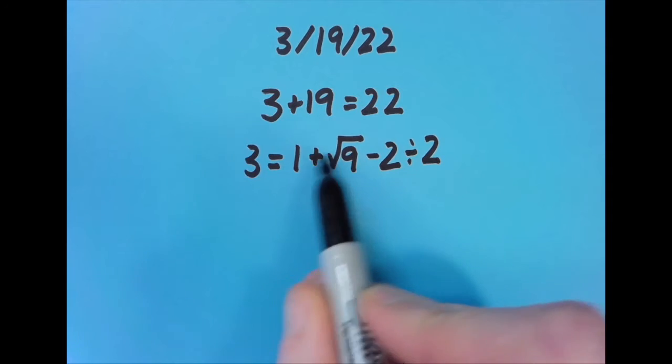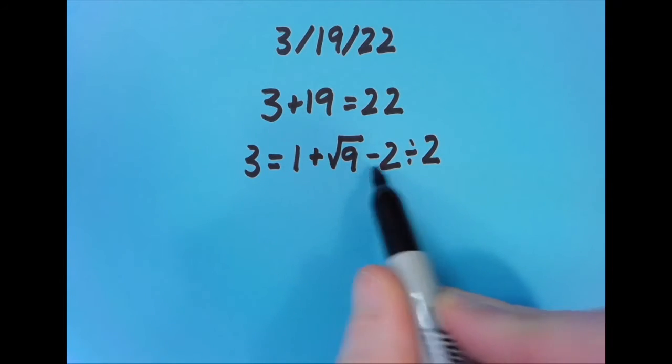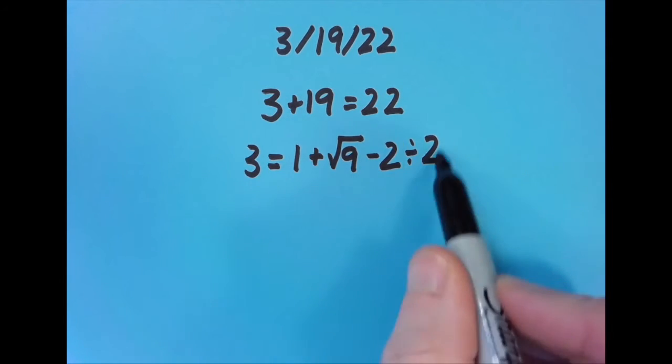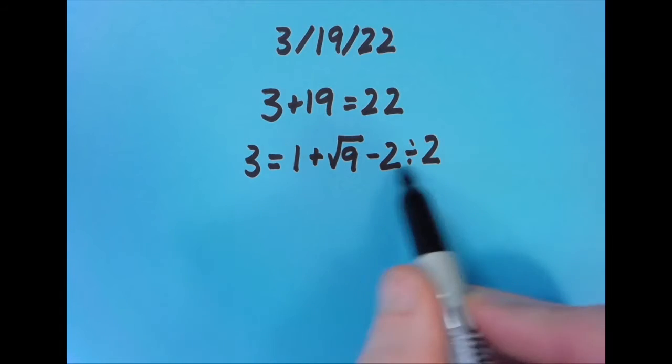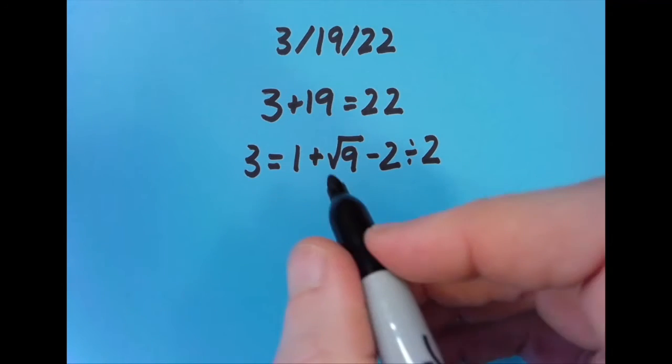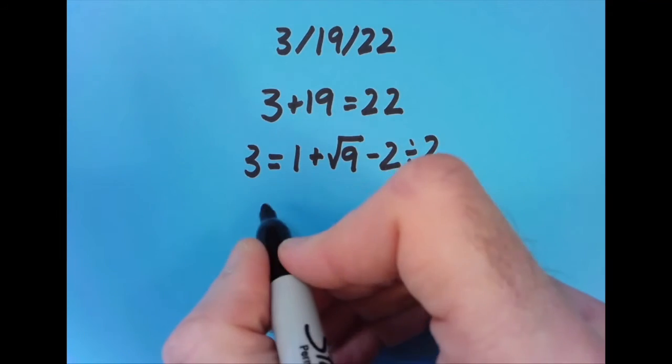So we have 1 plus 3, which is 4. Then we have to do minus all of this. So we have to do the division first. So that's going to be 1. So 4 minus 1 equals 3. And I really like that square root there. Not often we have perfect squares to work with.